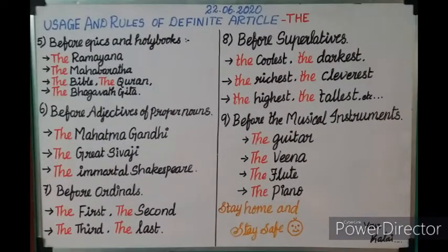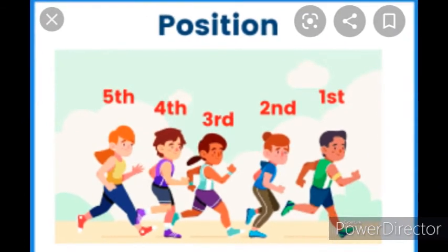That is the sixth rule. Next we will move to the seventh rule: before ordinals. Ordinals are numbers that indicate order or position — first, second, third, and so on. Before ordinals we use the definite article 'the': the first, the second, the third, the last.